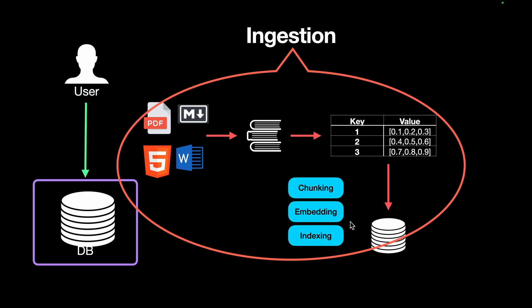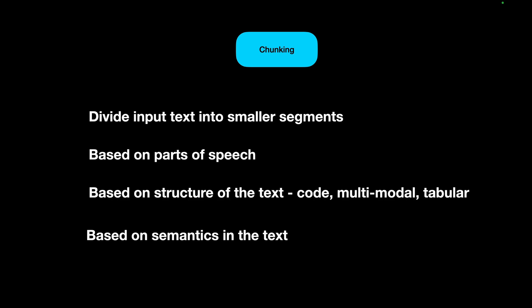What is chunking? Text chunking is a technique in natural language processing to divide input text into smaller segments. It can be based on parts of speech, or on the structure of the text — such as Python code or Markdown. It could be multimodal when you have a PDF with images and text, or tabular data with many tables, or it can even be based on semantics, grouping sentences or words with similar meaning together.